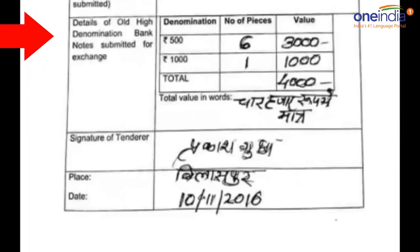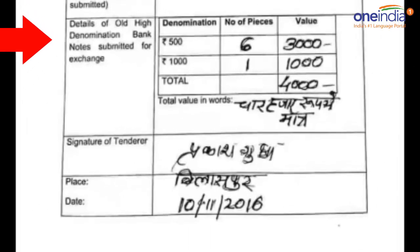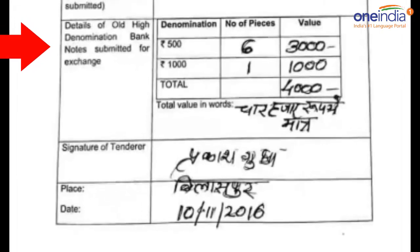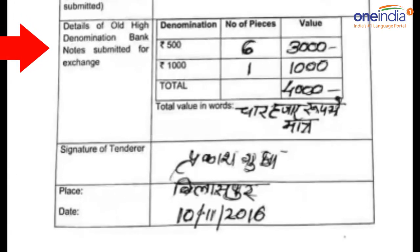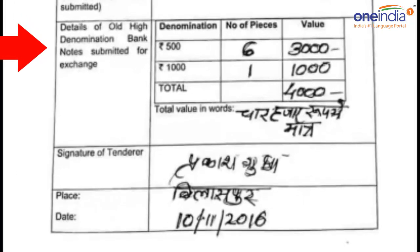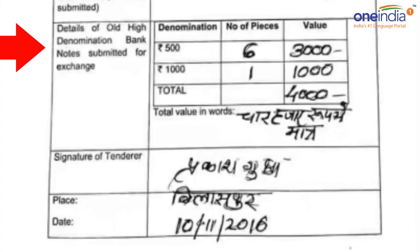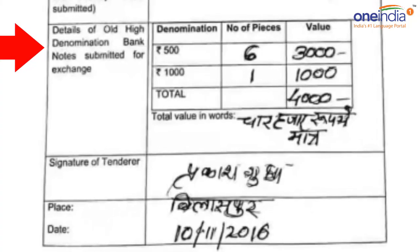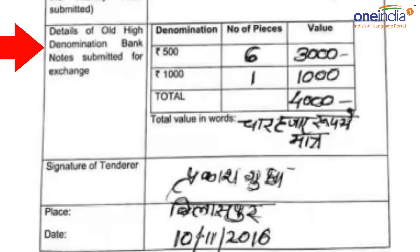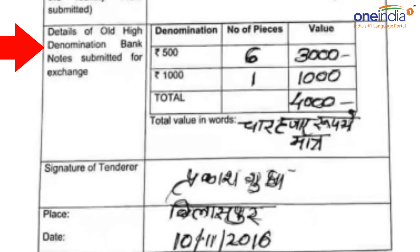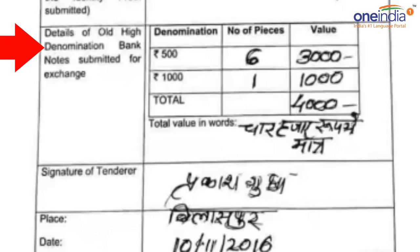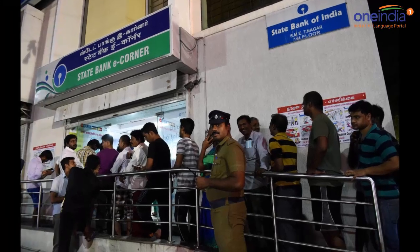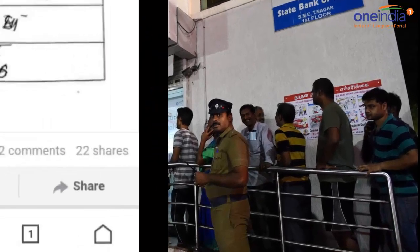After that, the next table is the detail of the old high denomination bank notes submitted for exchange. You have to count the numbers — for example, if you are submitting 22 notes of 500 rupee denomination, you have to write that you are submitting 22 notes of 500 rupees and what the total value is. The same applies for the 1000 rupee notes. Then you do the total and write it in numerals and also in alphabets.